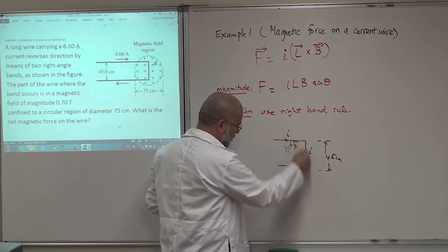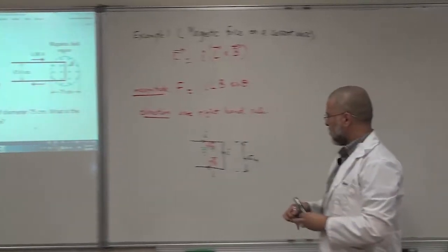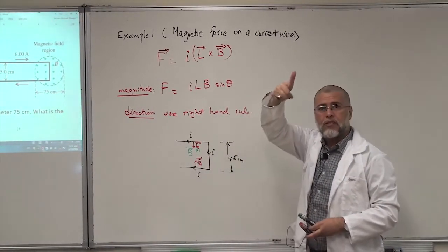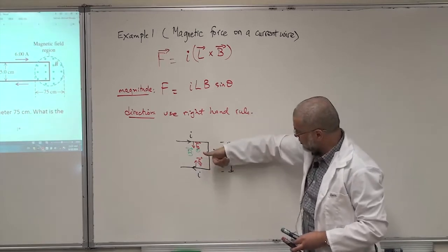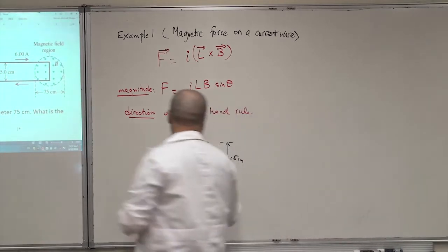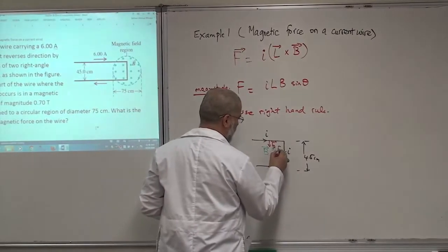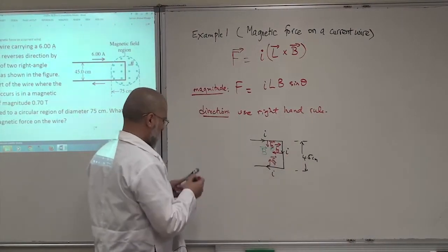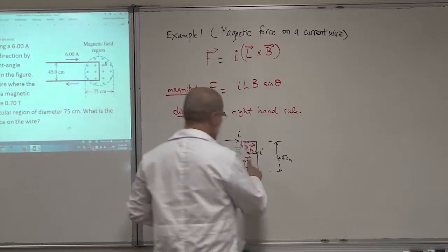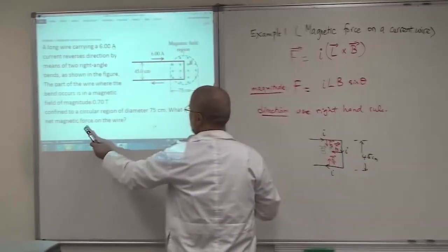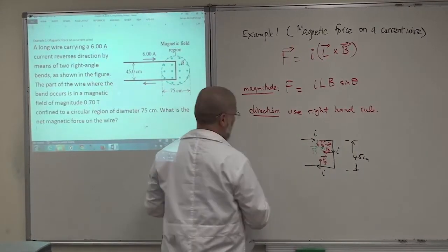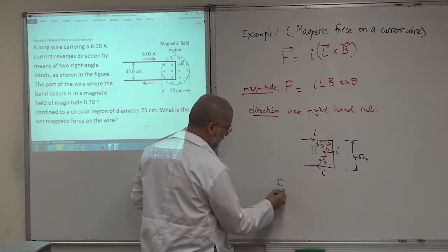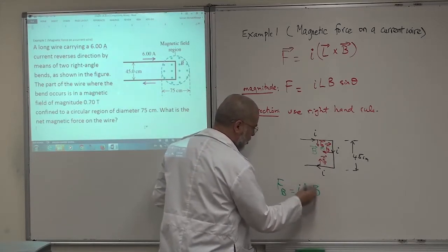Now let's look at the force on this vertical wire, where the current is coming down. I cross B — B is outside — so the thumb gives the direction of the force, which is to the left. There will be a force here on this vertical wire, and it will not be cancelled by anything. So the only important magnetic force will be this force here: F = I L B.